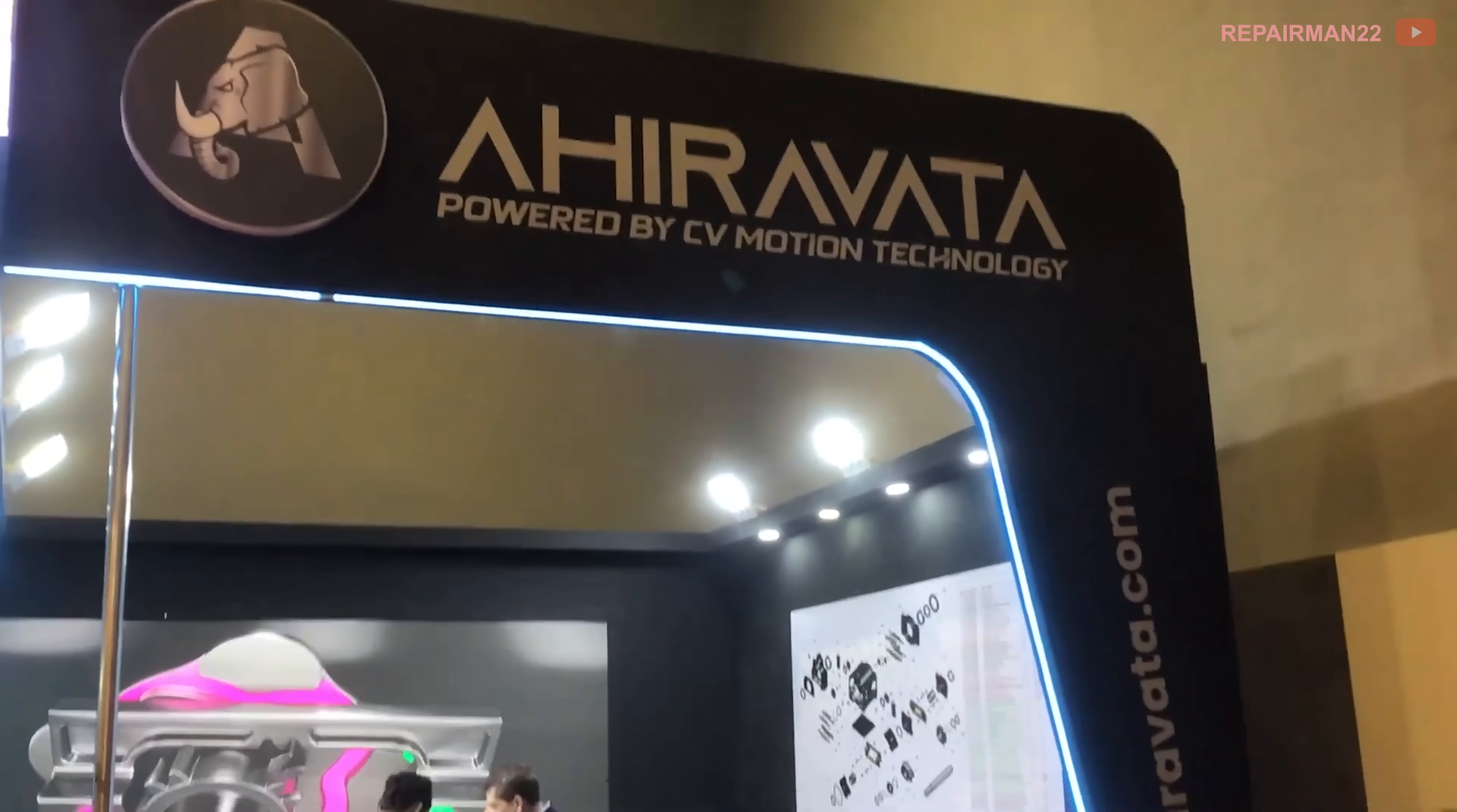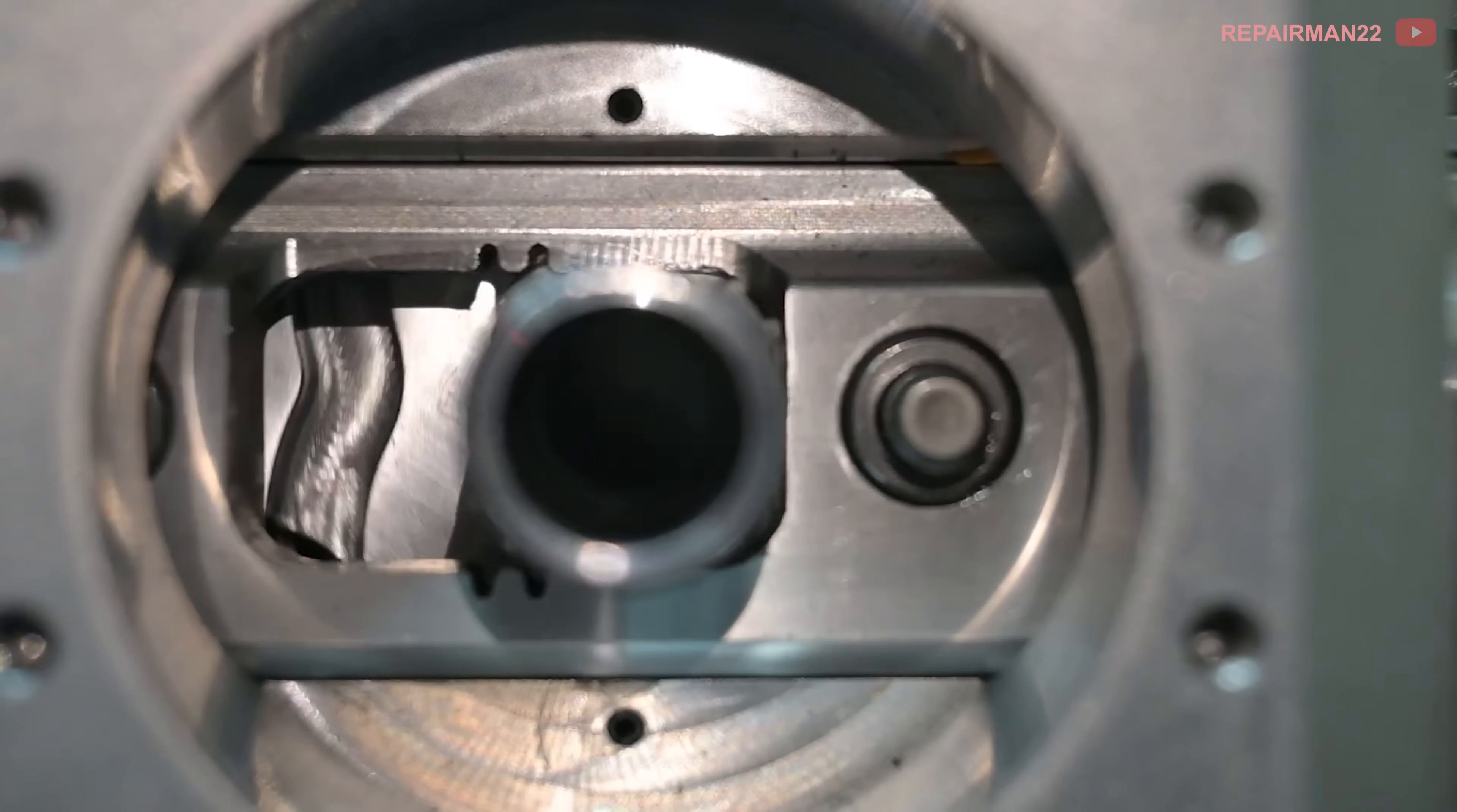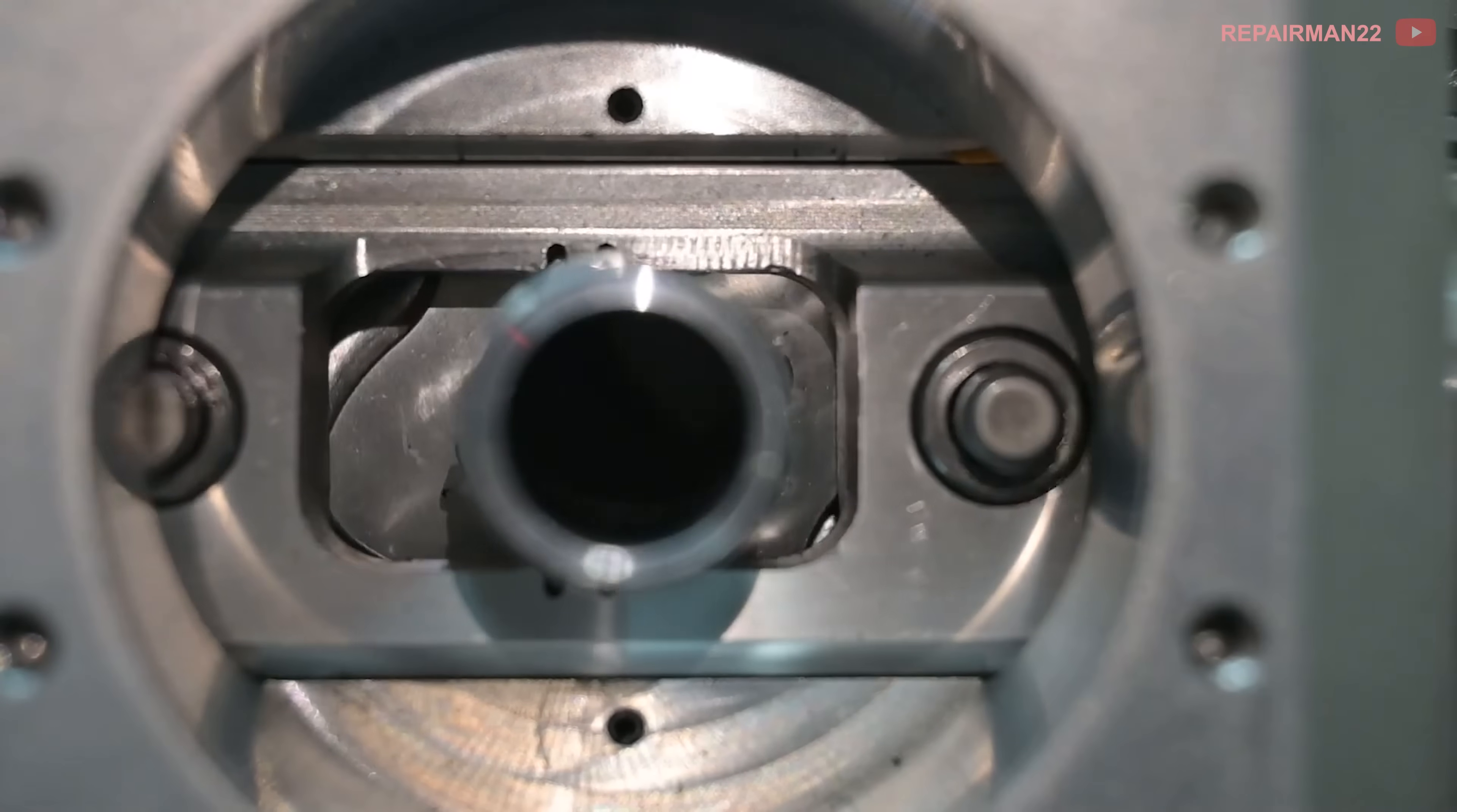The creators, knowing they needed to attract investors with a real engine rather than just 3D computer models, assembled a two-stroke engine like this one. Inside, we can see the flower mechanism in action. And as if that were not enough, we also see it running, burning fuel.